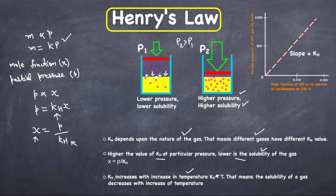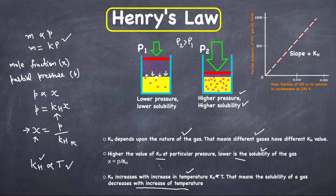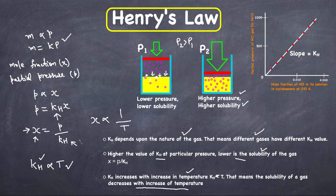Also, kH increases with increasing temperature — kH is directly proportional to temperature. So if temperature increases, the value of kH increases, which decreases the solubility. The solubility of a gas is inversely proportional to temperature. For example, oxygen dissolves more in cold water than in warm water — that's why fish prefer cold water, because there is more dissolved oxygen in cold water compared to warm water.